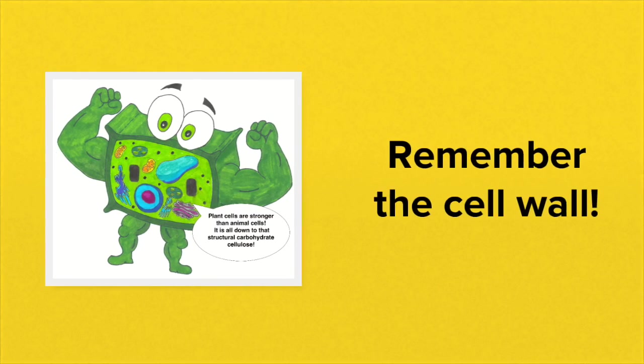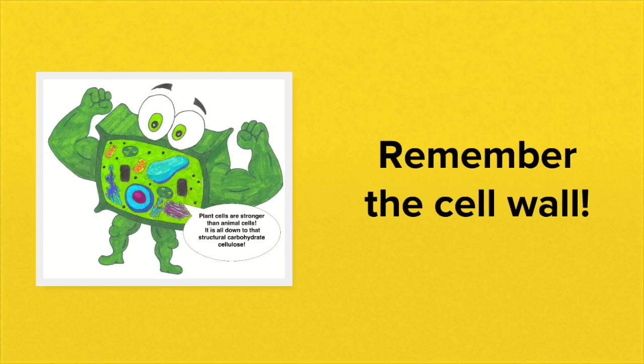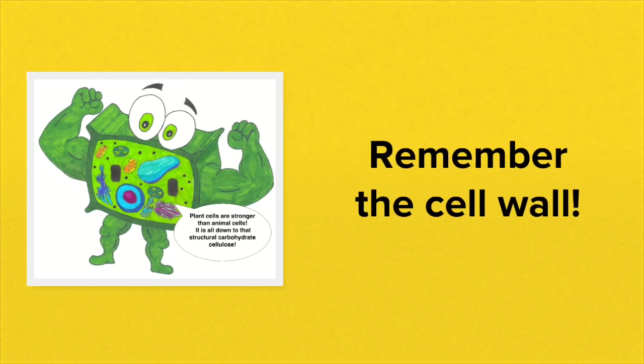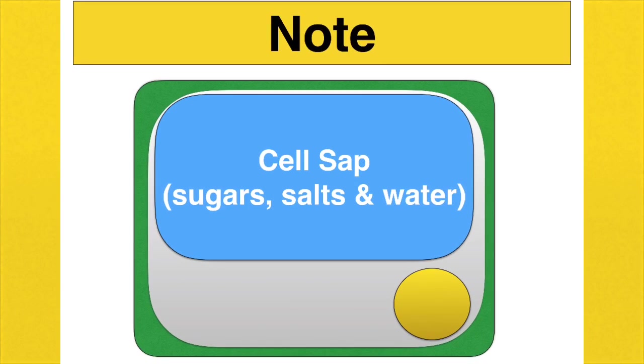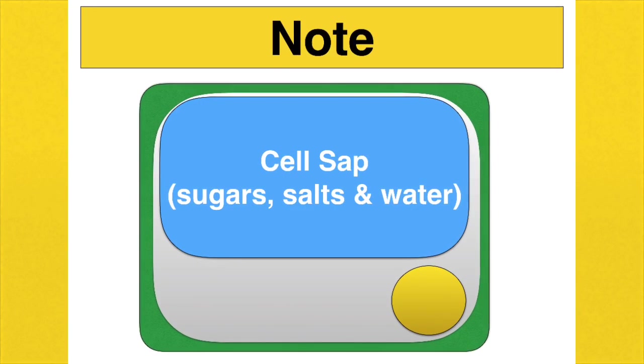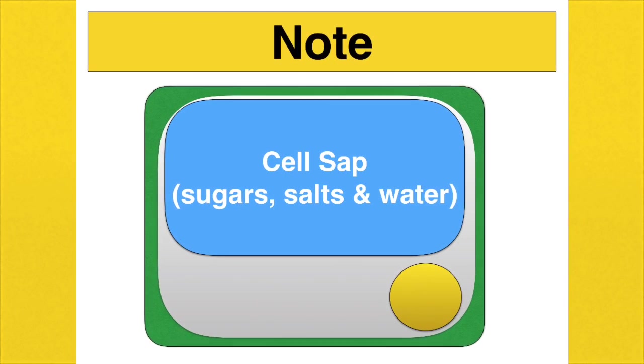So let's now examine plant cells, and remember that plant cells have that rigid cell wall made of cellulose. Also don't forget about that large vacuole, it is filled with cell sap, which basically is water and solutes such as sugars and salts.